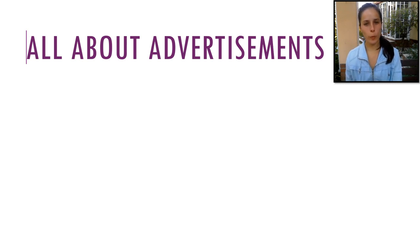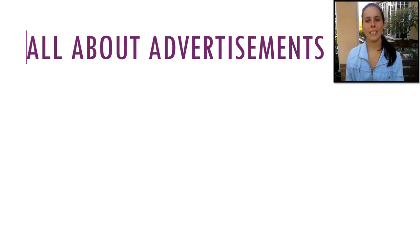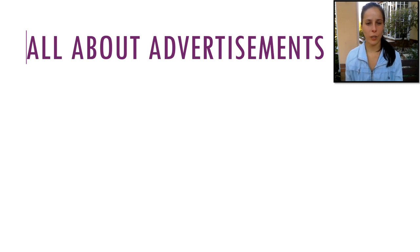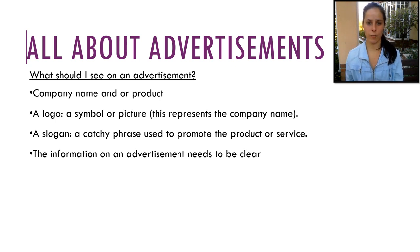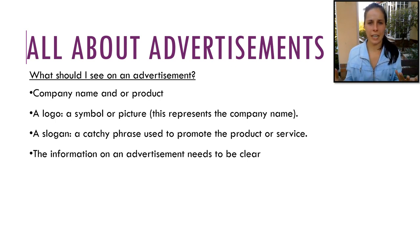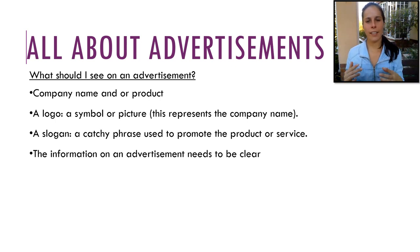We've looked at advertisements before — we did this last year as well, and you created an advertisement in class. So you should know what we're doing, but let's go through it as a refresher. What should I see on an advertisement? First of all, we'll have a company name or the name of the product. If I don't have the company name or the product name, people won't know where to buy their item from. Next thing is a logo — a symbol or picture that can often represent the name.